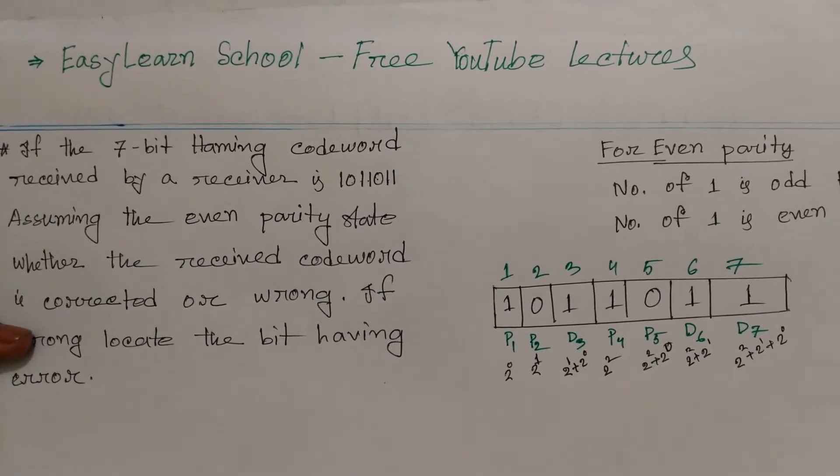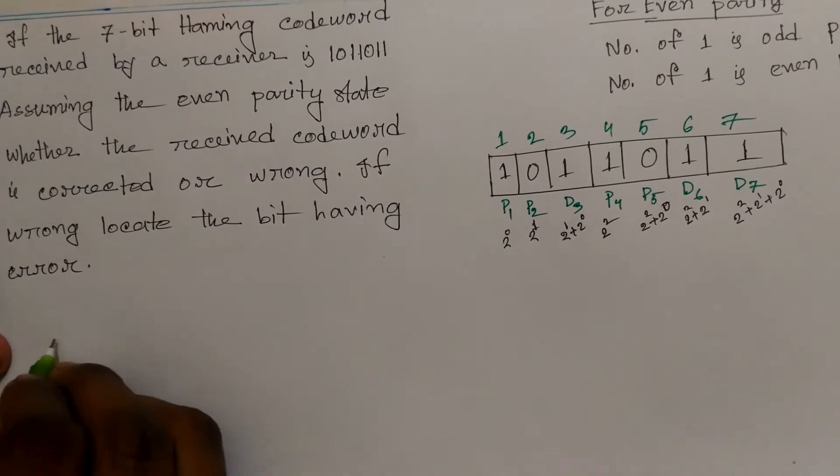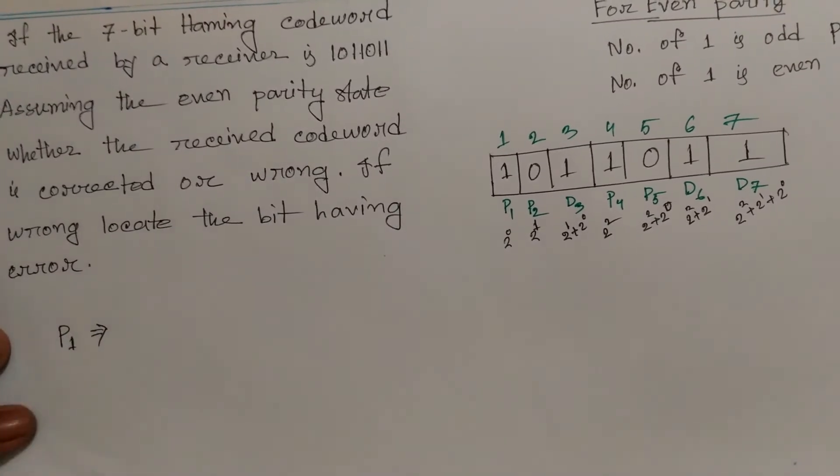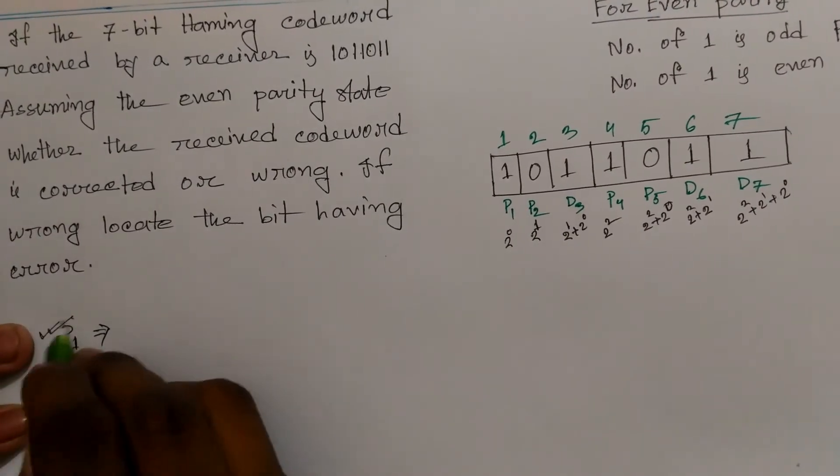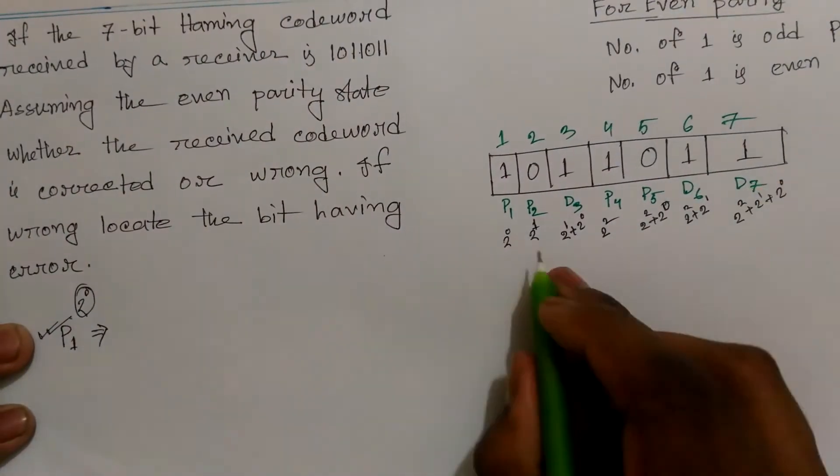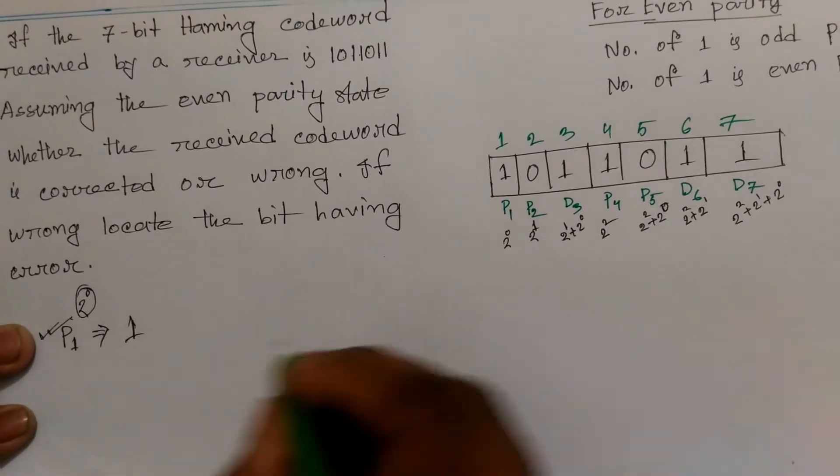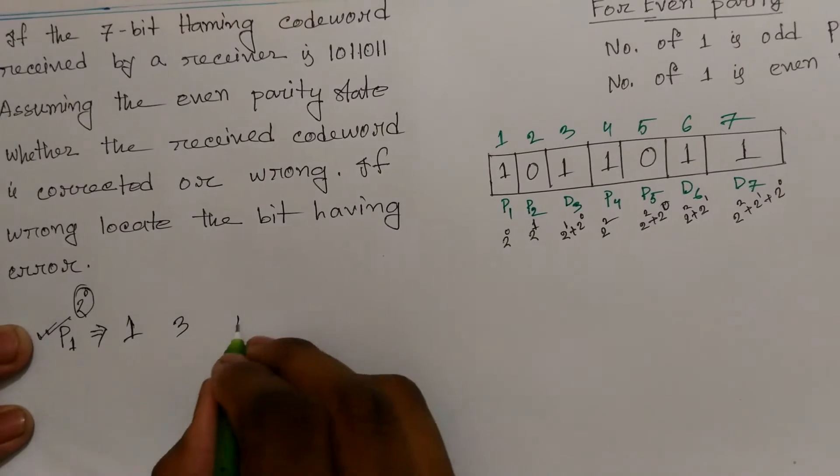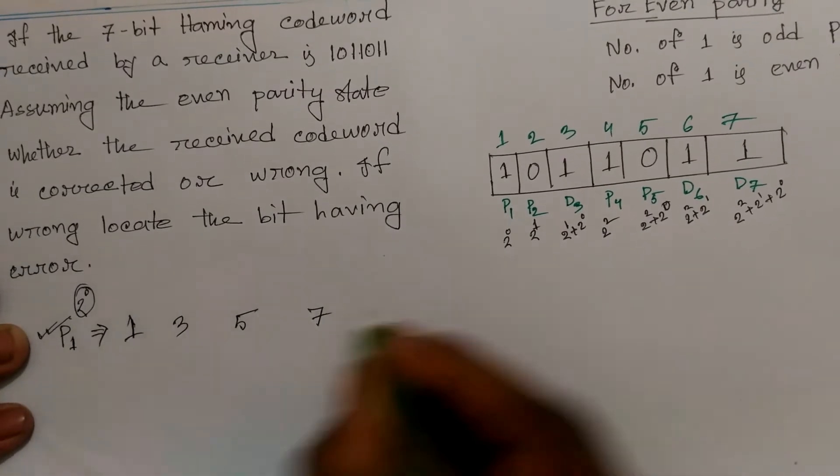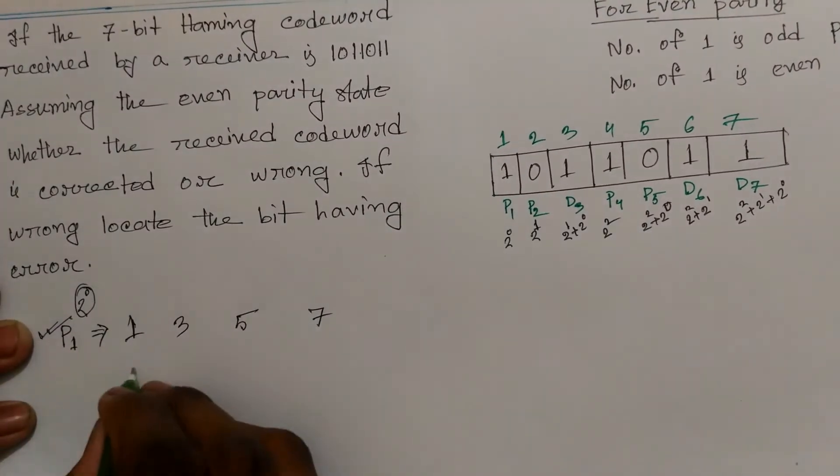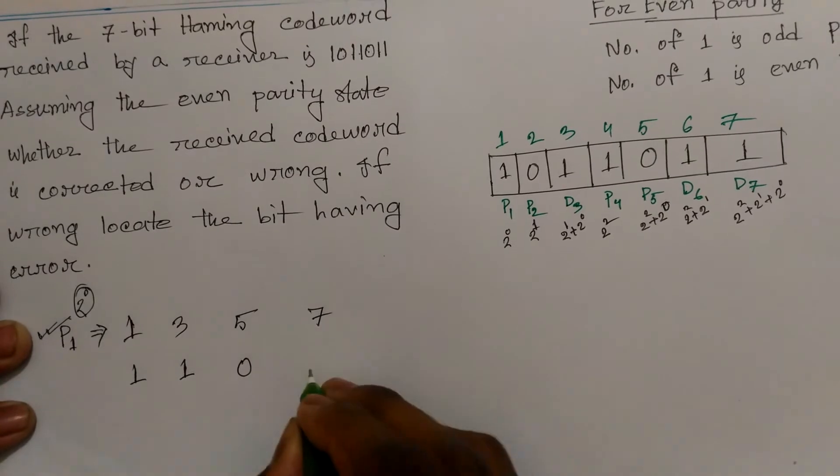Let's calculate parity bit P1. P1 is at position 1, which is 2^0. P1 checks positions 1, 3, 5, and 7. Position 1 has bit 1, position 3 has bit 1, position 5 has bit 0, and position 7 has bit 1.